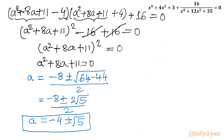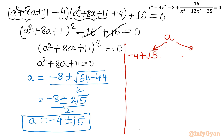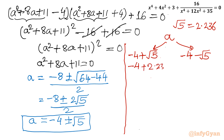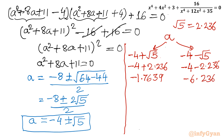Since we expect complex solutions, let's evaluate both values. The first value is a = −4 + √5 = −4 + 2.236 ≈ −1.764, and the second is a = −4 − √5 = −4 − 2.236 ≈ −6.236. Both values of a are negative, confirming complex solutions for x.